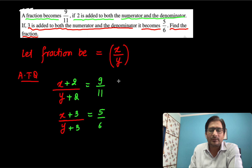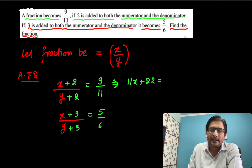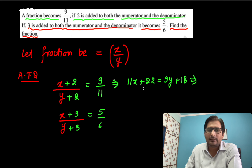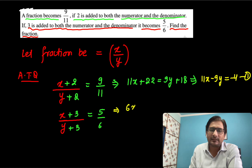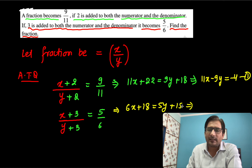We need to solve these two equations to get the value of x and y. By cross-multiplying on both sides, the first equation becomes 11x + 22 = 9y + 18, which can be rewritten as 11x − 9y = −4. This is Equation 1. Simplifying the second equation gives 6x + 18 = 5y + 15, which becomes 6x − 5y = −3. This is Equation 2.